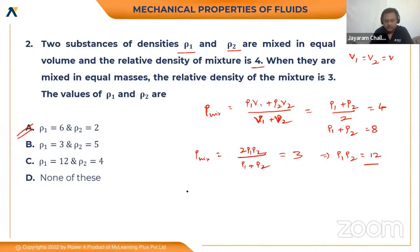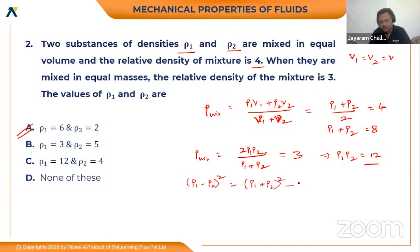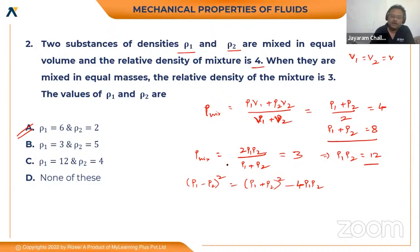Calculate rho1 into rho2, rho1 plus rho2, and rho1 minus rho2. Now, rho1 minus rho2 whole square is equal to rho1 plus rho2 whole square minus 4 times rho1 times rho2. By adding them you can get the values of rho1 and rho2.